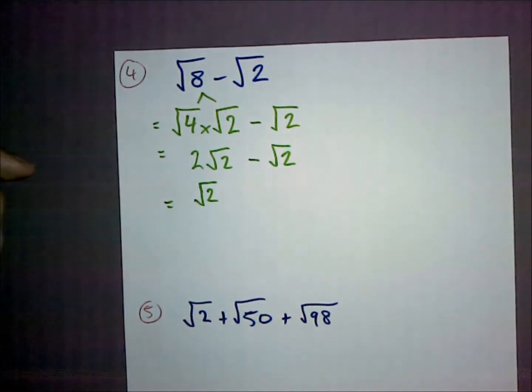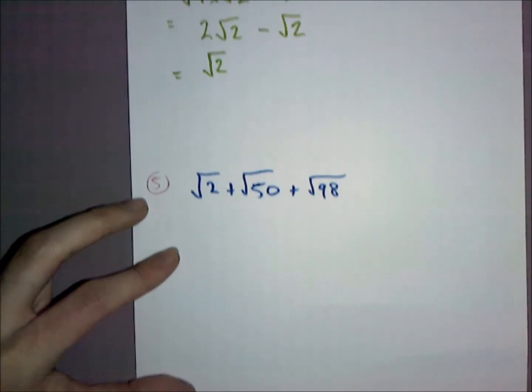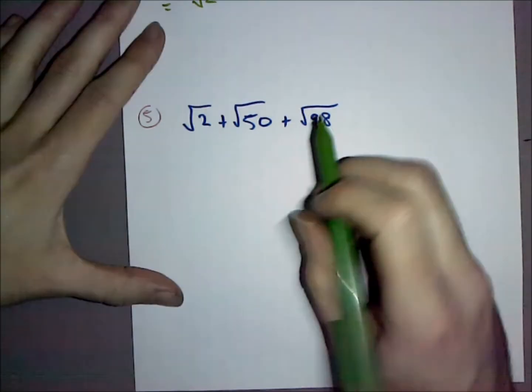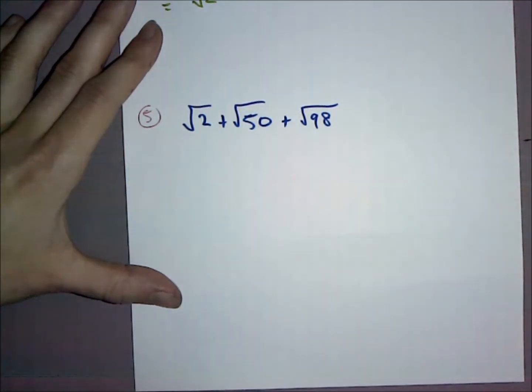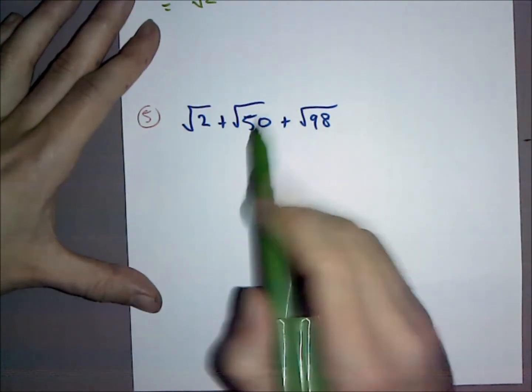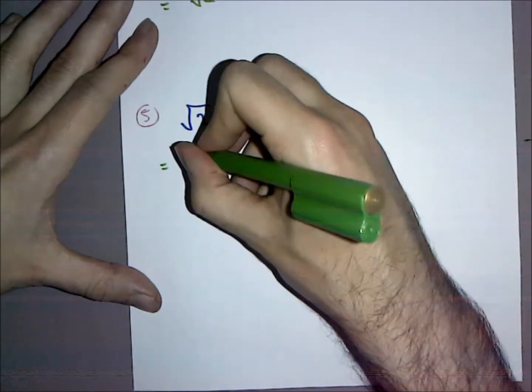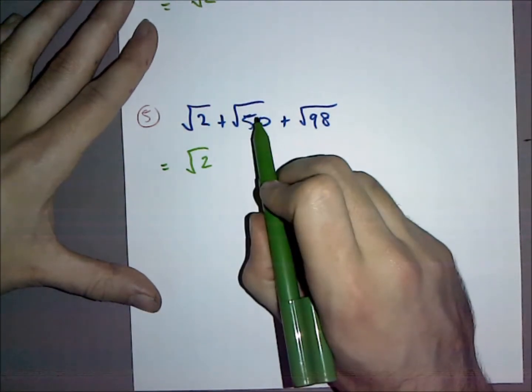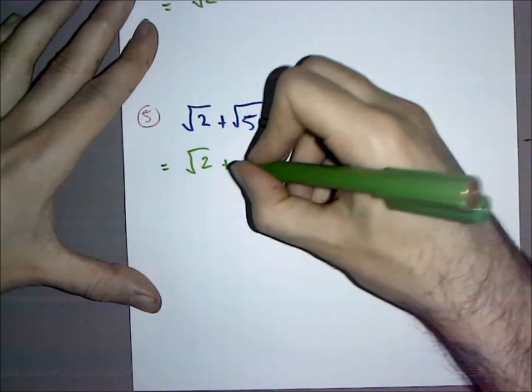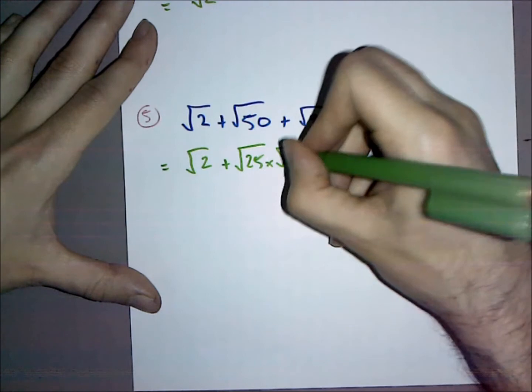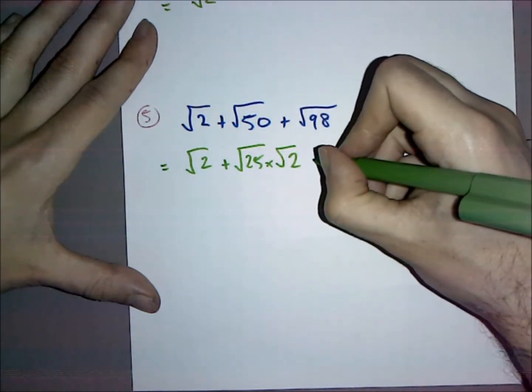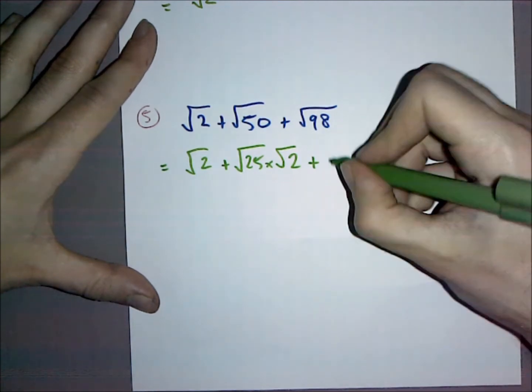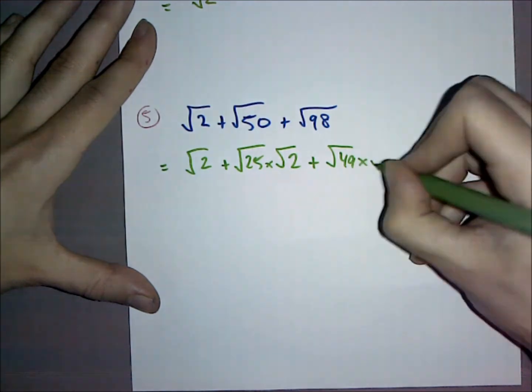Sometimes you have to simplify a couple of different things. Looking at √2 + √50 + √98, it's not completely obvious they're alike. I'll leave √2 at the front because I can't simplify it further. √50 can be split into √25 × √2, and √98 can be split into √49 × √2.